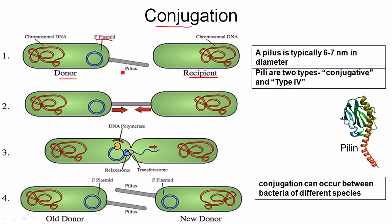The donor bacteria can produce a pilus, through which one bacteria can make a tunnel to the second bacteria. When the pilus makes a tunnel, the plasmid makes a single-stranded copy from the double-stranded plasmid, and then that single-stranded plasmid goes through the tunnel to the second recipient bacteria. This happens with the help of the relaxosome and the transferosome.